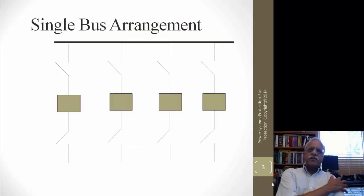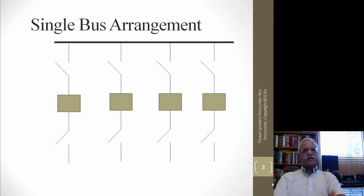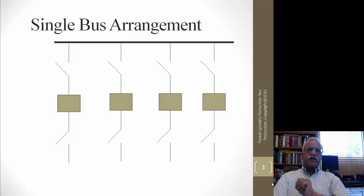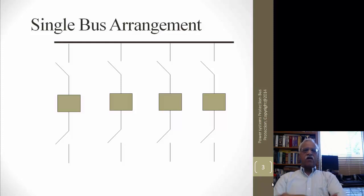Let's look at the single bus. This is the most simple arrangement where you have a source connected to the bus through a breaker, and the rest of the lines — which can be sources, transmission lines, or load-serving transformers — are connected to the same bus. Each element is connected through an interrupting device, which is a circuit breaker or circuit switcher.